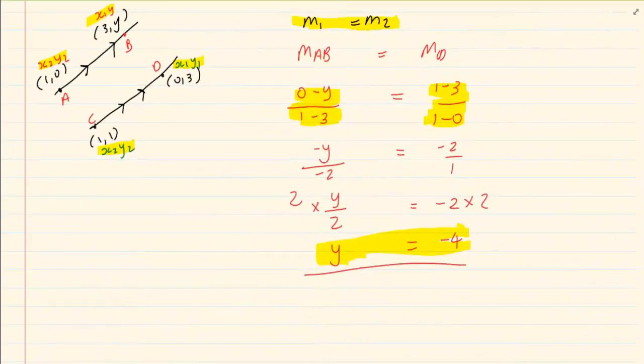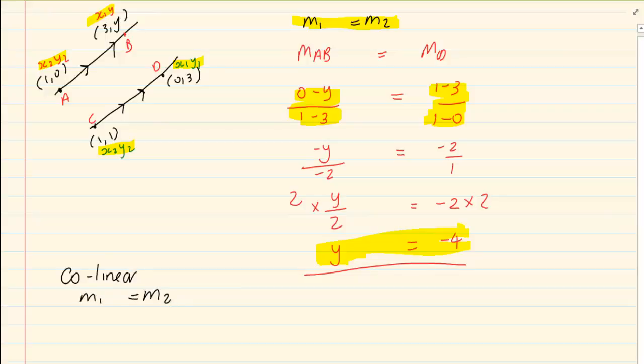The other concept that you had learned in grade 10 is that when they are collinear, then M1 is also equal to M2. So, they could ask you in a parallel form or they could say collinear. But when we use the words collinear or parallel, we are going to use the concept M1 is equal to M2. Thank you for watching.